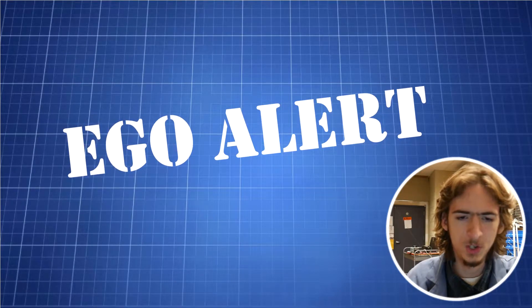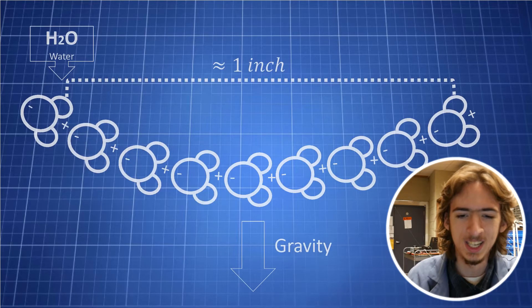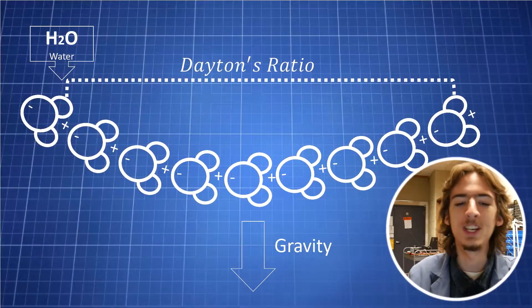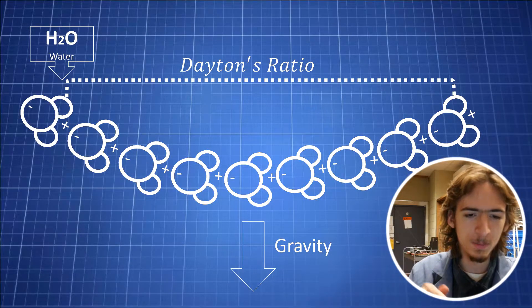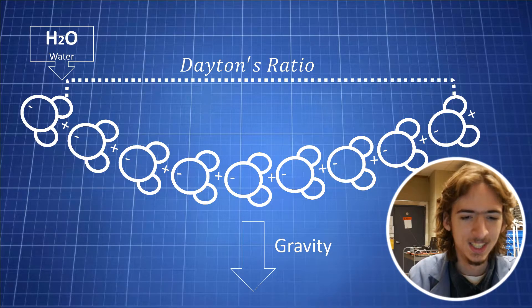Huh. Turns out there's no name for this. So I henceforth decree that it shall be called Dayton's Ratio, the length that water can be suspended due to hydrogen bonding and support its own weight. That's mine now.